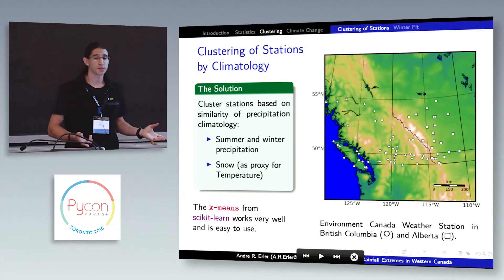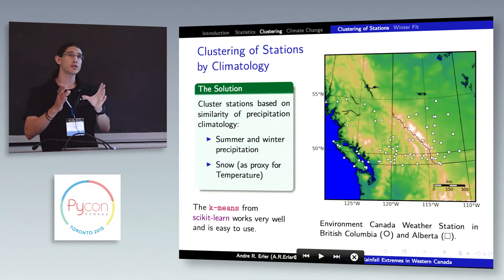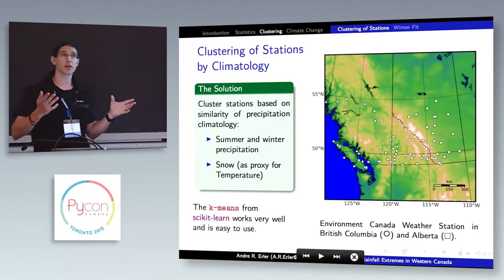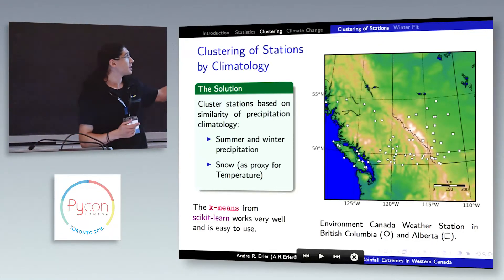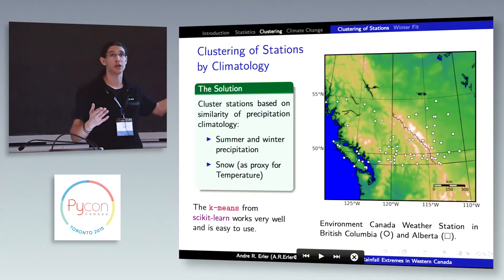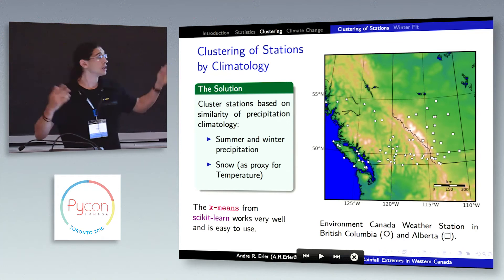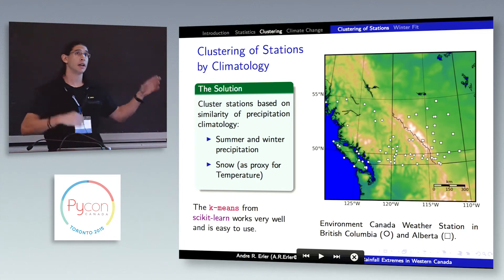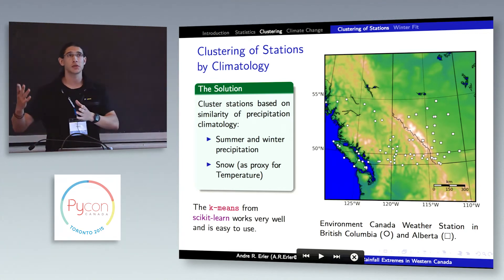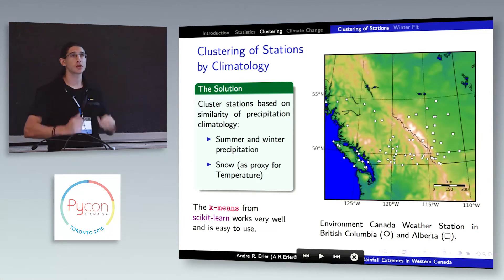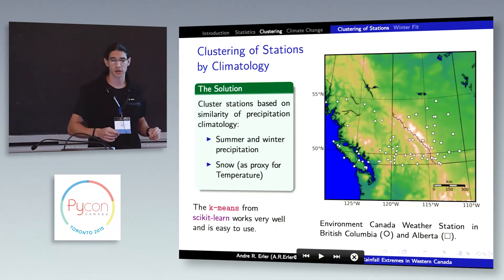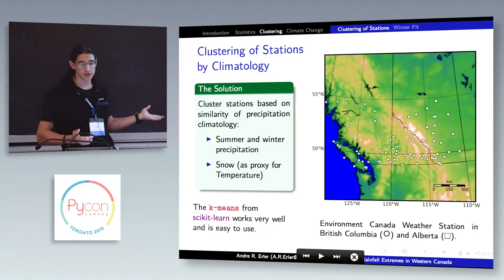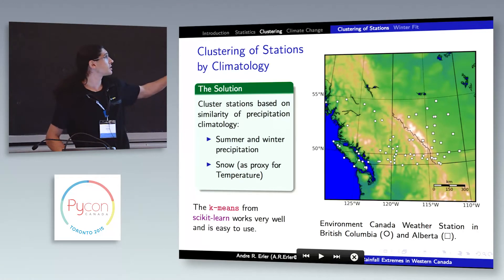So what can we do to fix this? We have to group stations in a sensible way so that we can assume the data comes from the same parent distribution. For this, we can use clustering algorithms from scikit-learn. We can cluster stations based on summer and winter precipitation and also snow, which serves as a proxy for temperature, ensuring they have the same type of climate. The algorithm I used here is k-means.